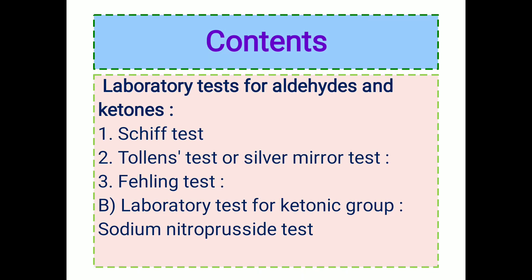We will study the laboratory tests for aldehydes and ketones. For aldehydes, we perform three tests: the Schiff's test, the Tollens test (also known as the silver mirror test), and the Fehling's test. For the ketonic group, we perform the sodium nitroprusside test.